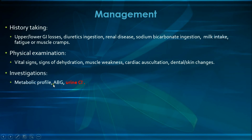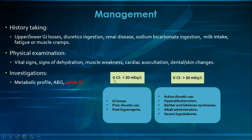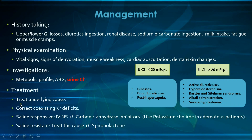Key investigations include a metabolic profile checking electrolytes, particularly potassium, an ABG, and urinary chloride levels. Urinary chloride categorizes etiologies: low urinary chloride (less than 20 mEq/L) includes GI losses, prior diuretic use, and post-hypercapnia; high urinary chloride (more than 20 mEq/L) includes active diuretic use, hyperaldosteronism, Bartter and Gitelman syndromes, alkali administration, and severe hypokalemia.